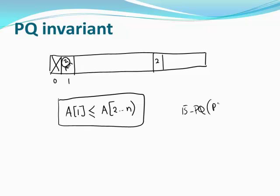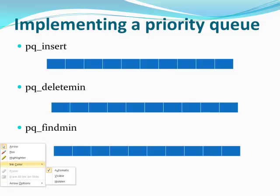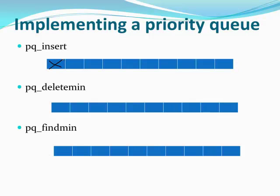Let's think about the naive implementation of a priority queue using a simple array. We skip the 0th location. The only invariant we need is that the minimum is at a[1] — we don't care about the ordering of other elements, only that a[1] is less than or equal to all elements from a[2] to a[size-1].